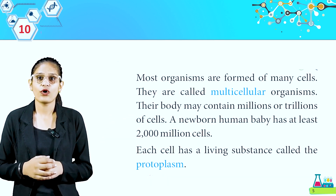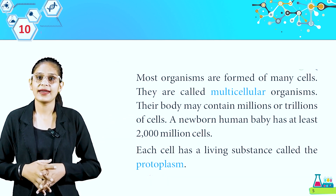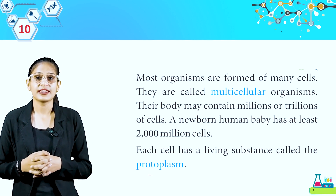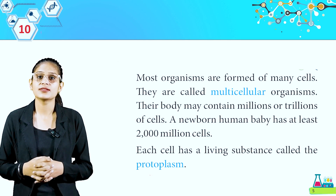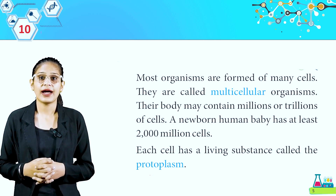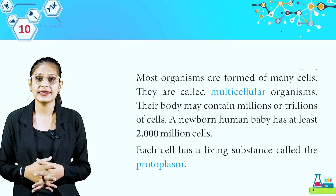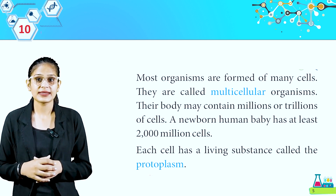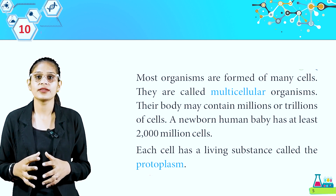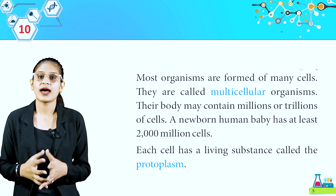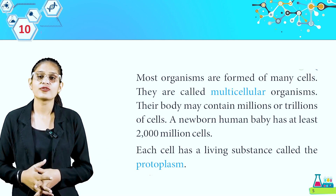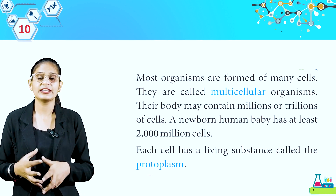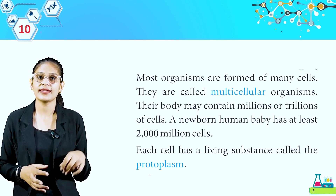Most organisms are formed of many cells. They are called multicellular organisms. Their body may contain millions or trillions of cells. A newborn human baby has at least 2,000 million cells. Each cell has a living substance called the protoplasm. Students, hum aur other animals multicellular hote hain. Aur cells mein ek living substance hota hai, that is protoplasm.